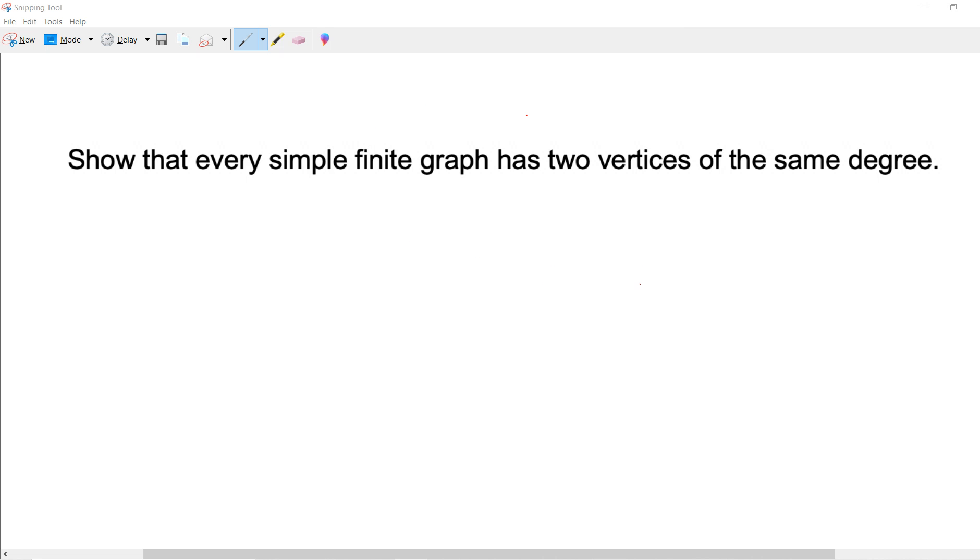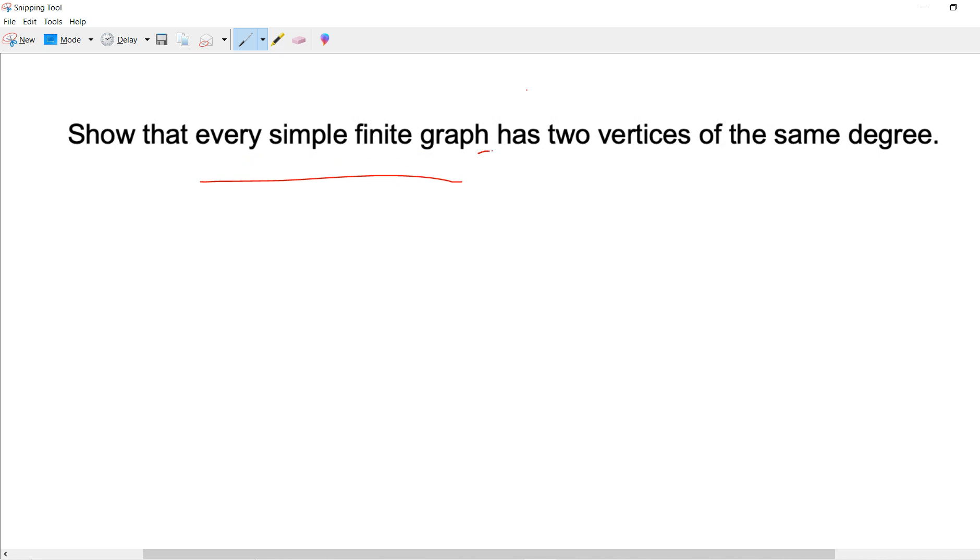So welcome to my graph proof section. This problem is to show every simple finite graph has two vertices of the same degree.